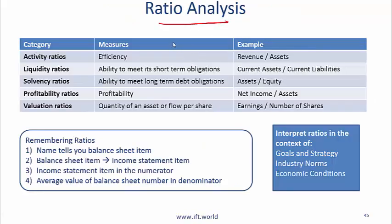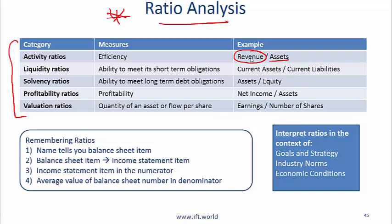Ratio analysis — this is extremely important. We have the broad categories of ratios. Activity ratios measure the efficiency of a company. In an activity ratio, the numerator is something from the income statement and the denominator is a number from the balance sheet. An example of an activity ratio is revenue divided by assets.